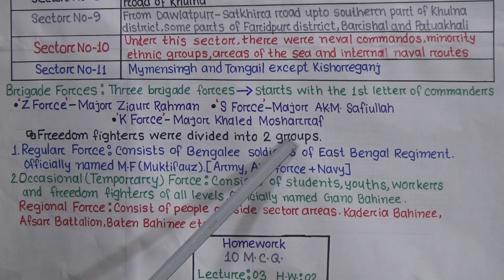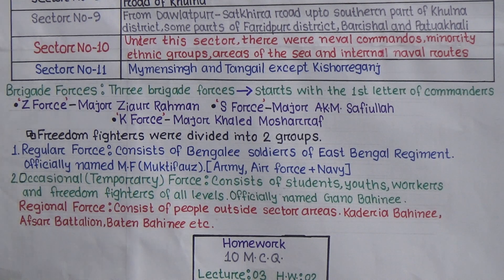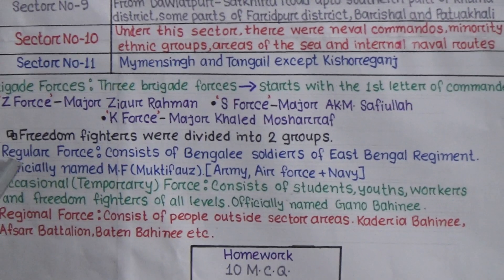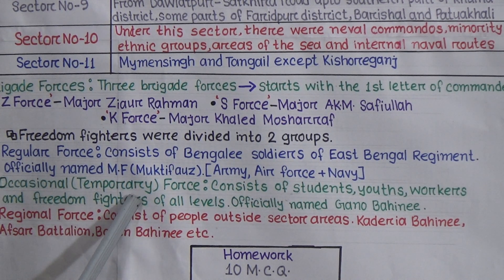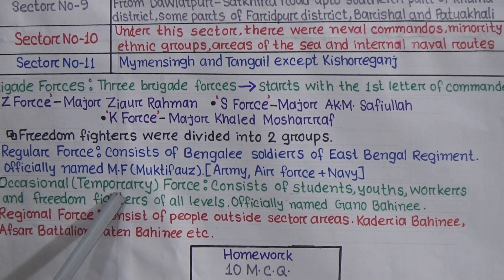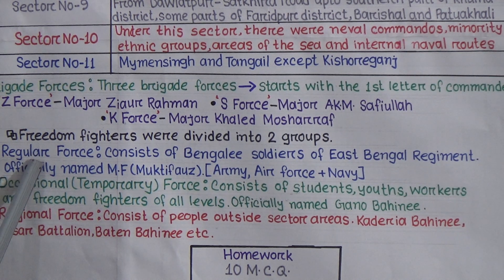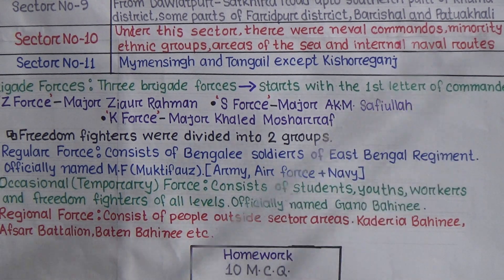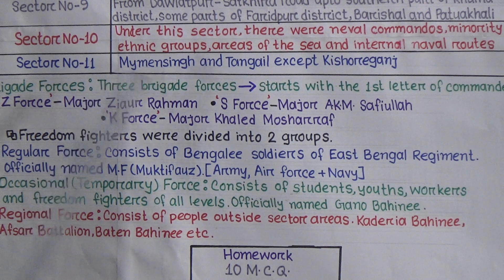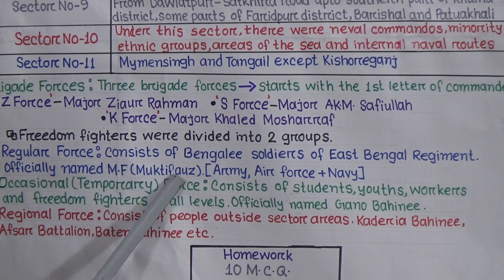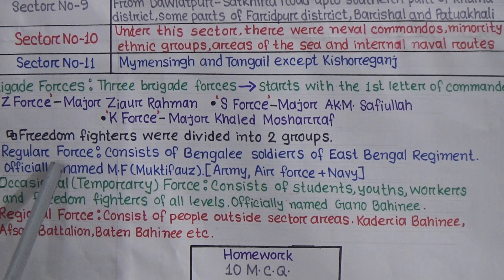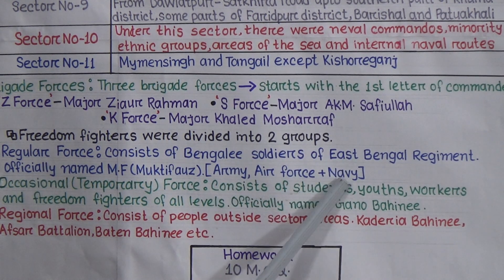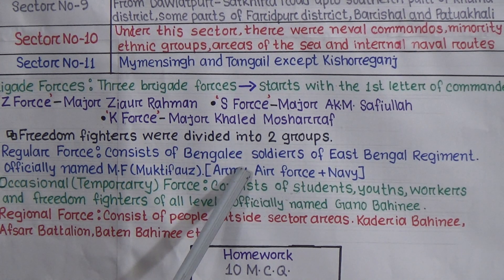Freedom fighters were divided into two groups. The first is Regular Force, and the second is Occasional or Temporary Force. Regular Force consisted of Bengali soldiers of the East Bengal Regiment. Regular Force was officially named MF, meaning Mukti Force. In this force, the army, air force, and navy were included — that means all government forces were part of Regular Force.